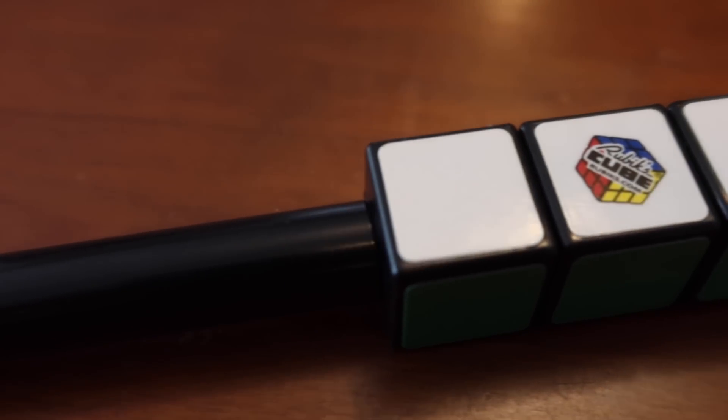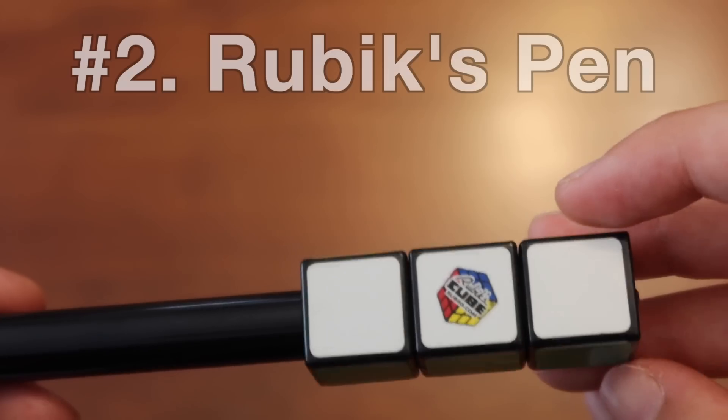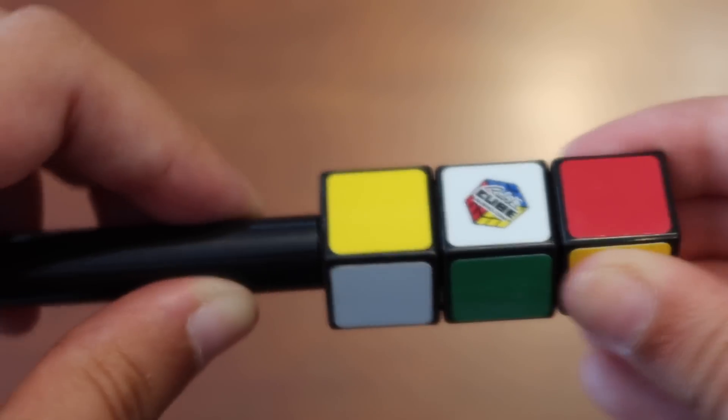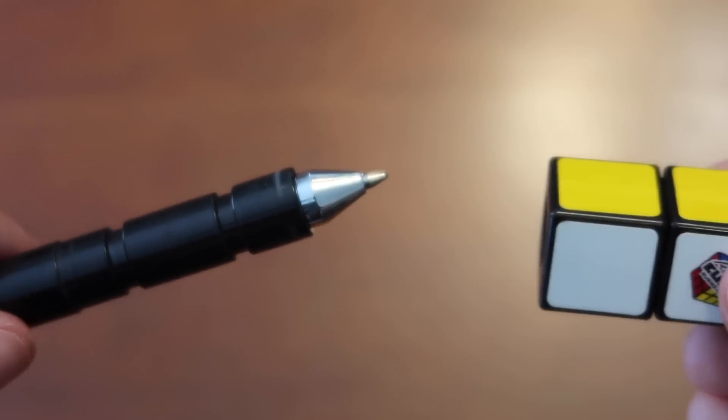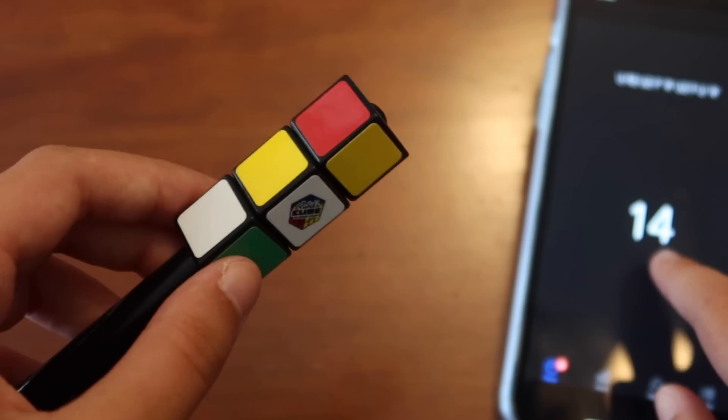In number two, we have the Rubik's Pen, which is basically a 1x1x3 cuboid. The cap doesn't come off unless it's solved, and then you can remove the cap. This can always be solved in two moves, so super easy.